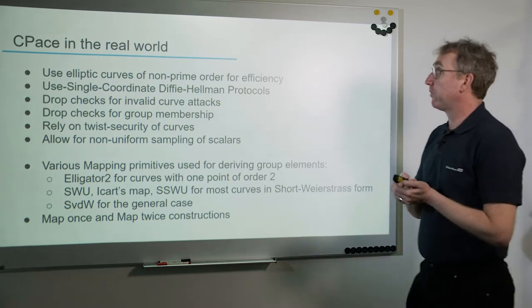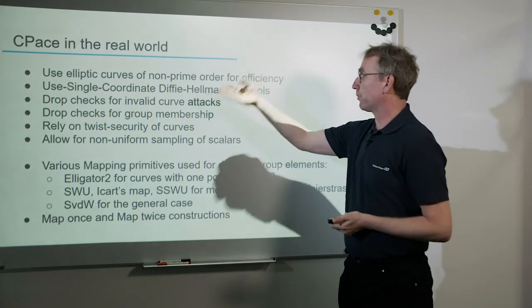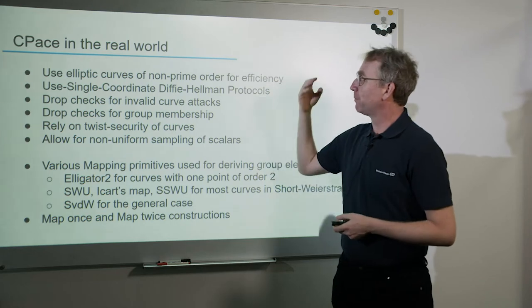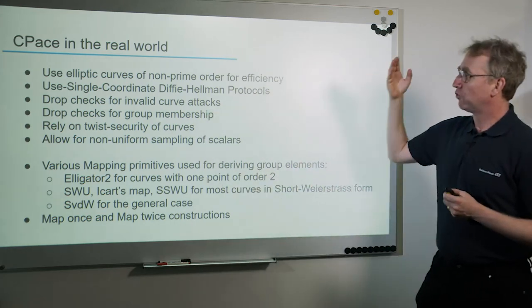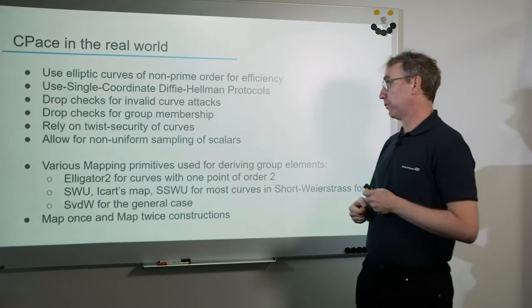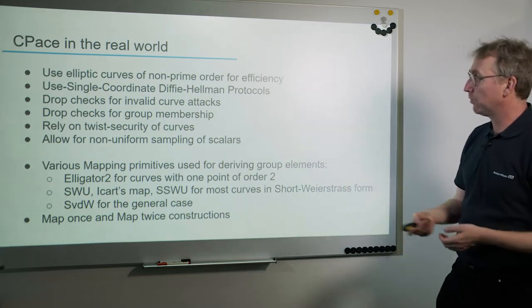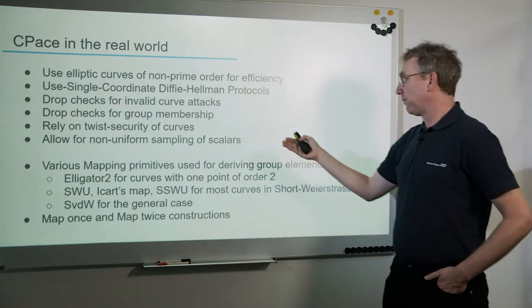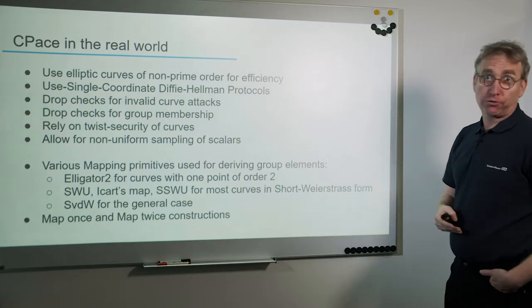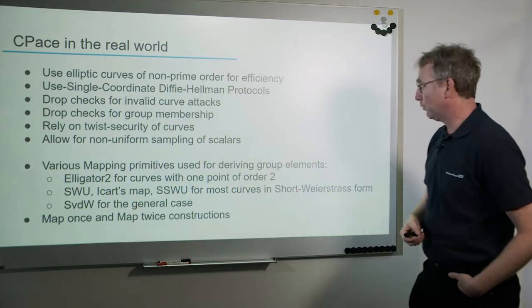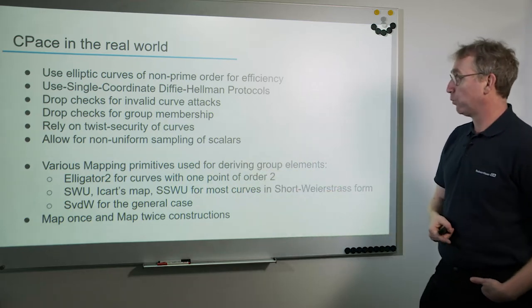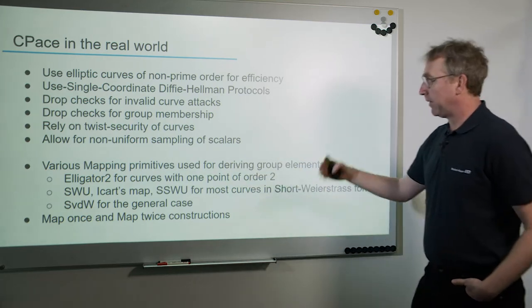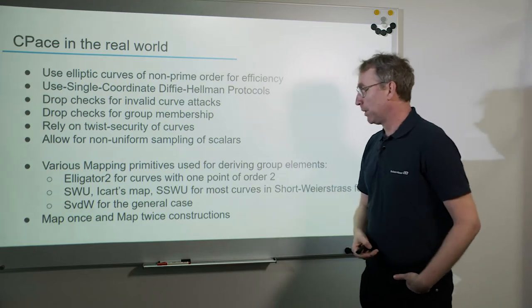What is specific for CPACE in the real world? We would like to use curves of non-prime order for efficiency, use single-coordinate Diffie-Hellman protocols, drop checks for invalid curve attacks and group membership by relying on twist security of curves, allow for non-uniform sampling of scalars, and choose different mapping primitives depending on the curve group — for instance, Elligator 2 for Montgomery or Edwards curves, and Eckert's MAP or SWU for short Weierstrass curves, using MAP1 and MAP2 constructions.